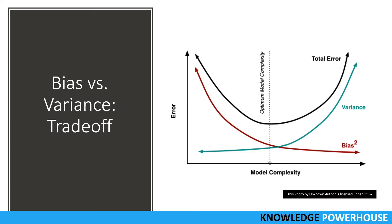In the bias versus variance trade-off diagram, the vertical axis represents the error in our prediction and the horizontal axis represents model complexity. The red line is bias and the blue line is variance. When the model is not complex — on the left side — the bias is very high, meaning the number of errors is very high. As we make the model more complicated, bias starts reducing and accuracy starts increasing. But when we make the model too complicated, bias reduces yet errors do not keep going down, because the model finds more variance in the test data, which drives errors back up.